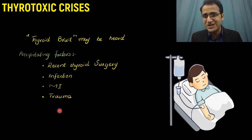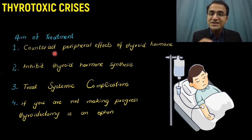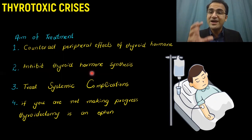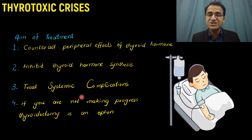Coming to the treatment and management of thyrotoxicosis: treatment is aimed at counteracting the peripheral effects of thyroid hormone. We will give drugs that block the peripheral action of thyroid hormone, drugs that inhibit thyroid hormone synthesis, and treat the systemic complications. If we are unable to control the thyrotoxic crisis with these measures, we may have to consider total thyroidectomy — removal of the thyroid gland — to save the patient's life.